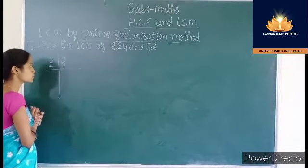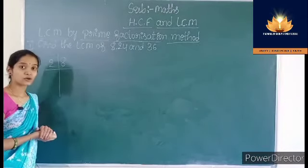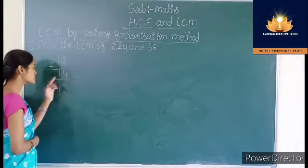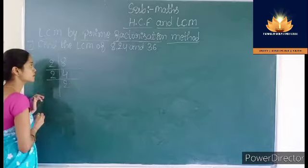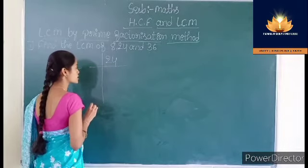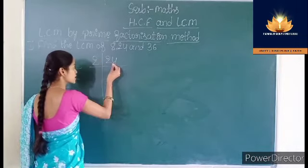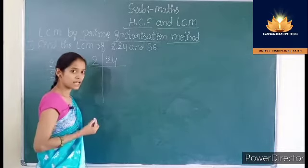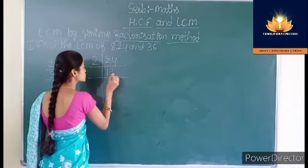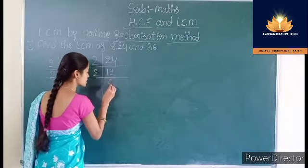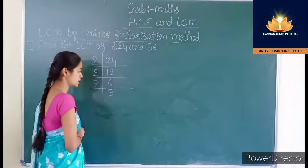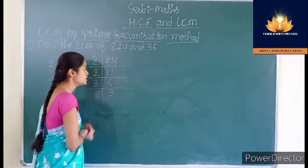8 divided by 2 is 4, and the quotient is written on the next line. Then 4 divided by 2 is 2. Then for 24, we take the smallest possible prime factor, that is 2. 24 divided by 2 is 12. 12 divided by 2 is 6. 6 divided by 2 gives 3. 3 is also a prime number, so we cannot divide further.